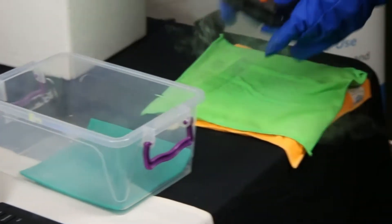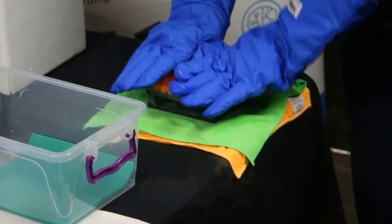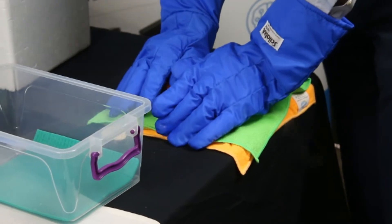Next, to remove the excess ethanol, let's place it on our blotting station. Press it firmly down again.